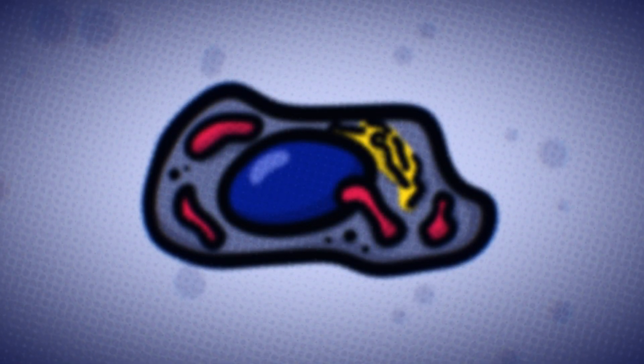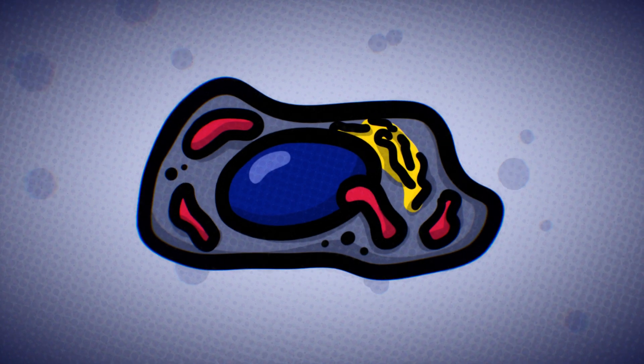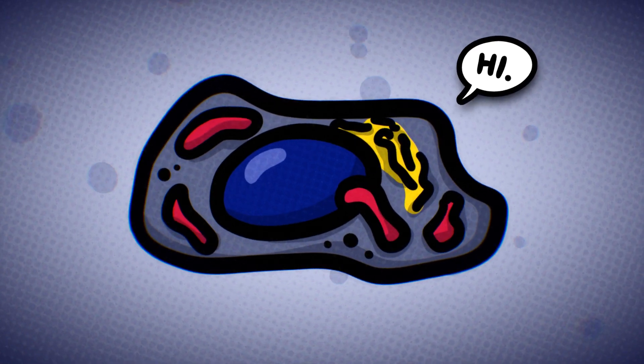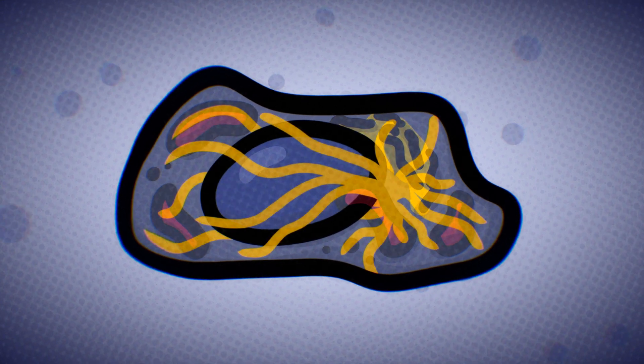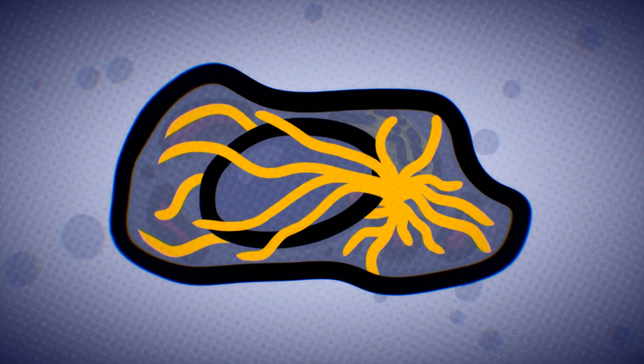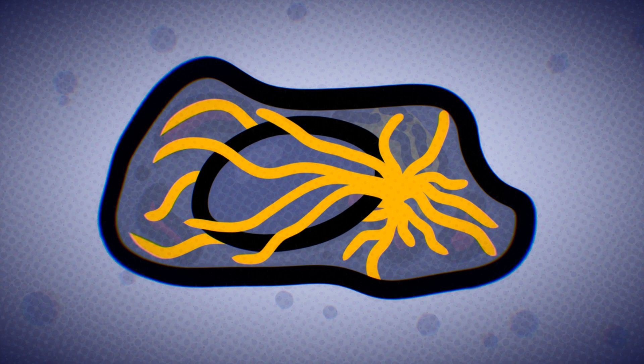A human cell is an interesting place. There are lots of processes going on inside that keep it alive. Some of the most essential processes are carried out with the help of microtubules, long tubes spanning across the cell.